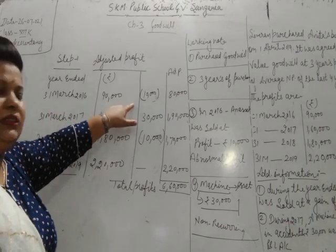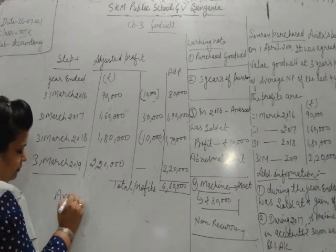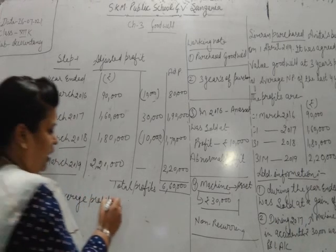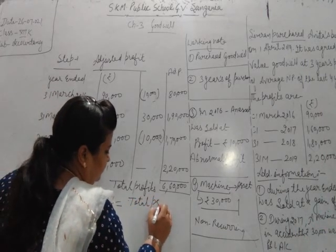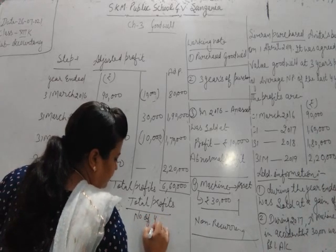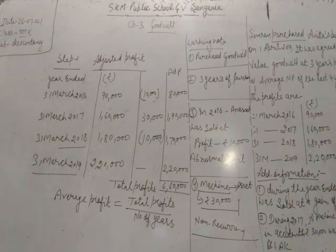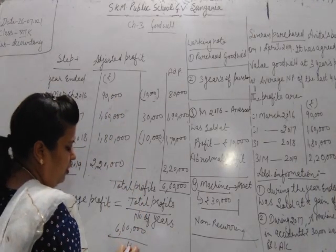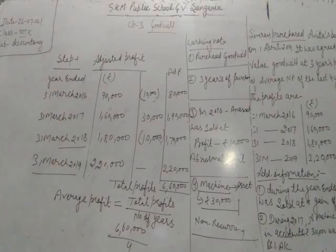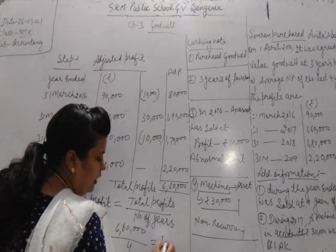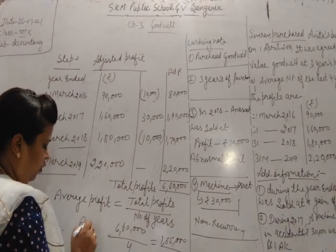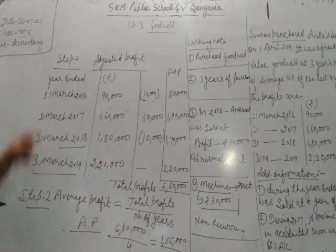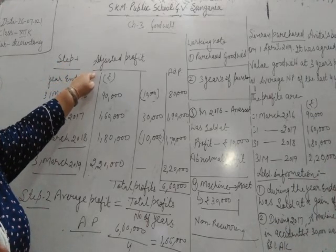Now we will calculate the average profit. The formula is: total profits divided by number of years. Total profit is Rs. 6,60,000 divided by 4 years, which gives an average profit of Rs. 1,65,000. We have completed step two — calculation of the average profit.